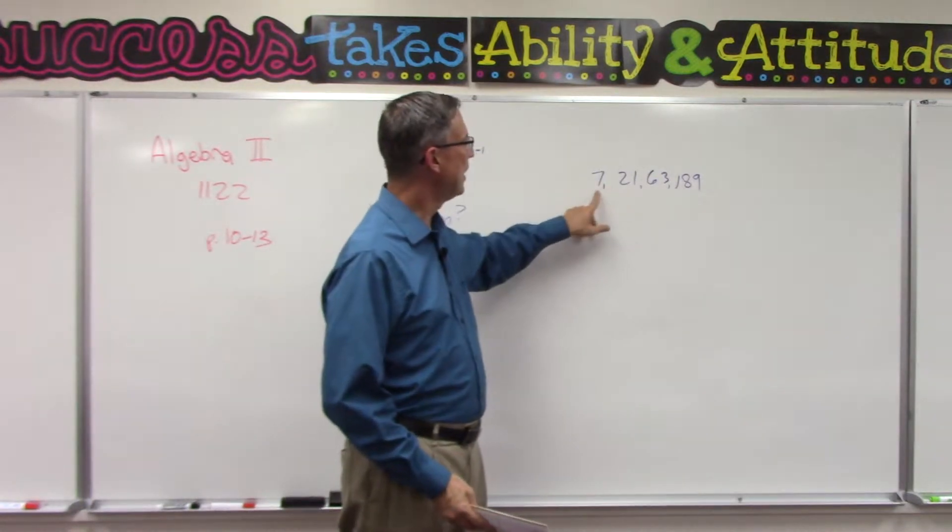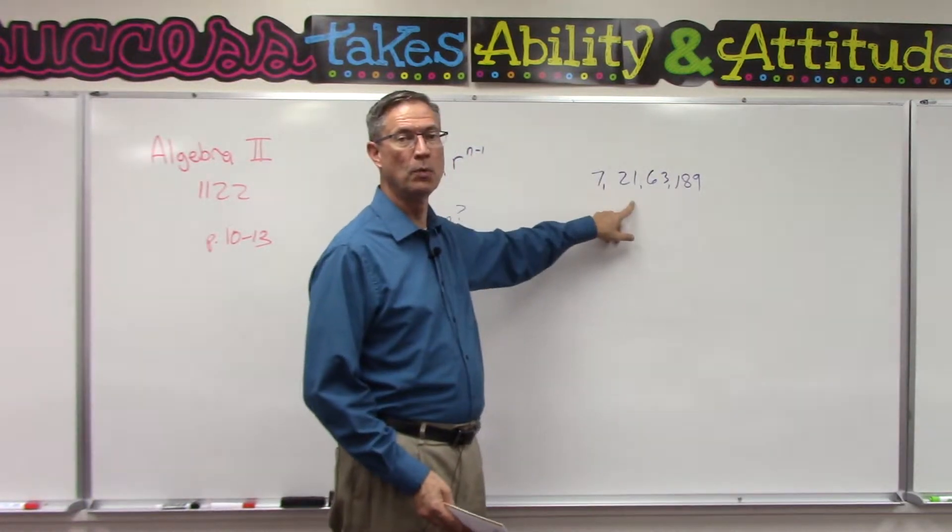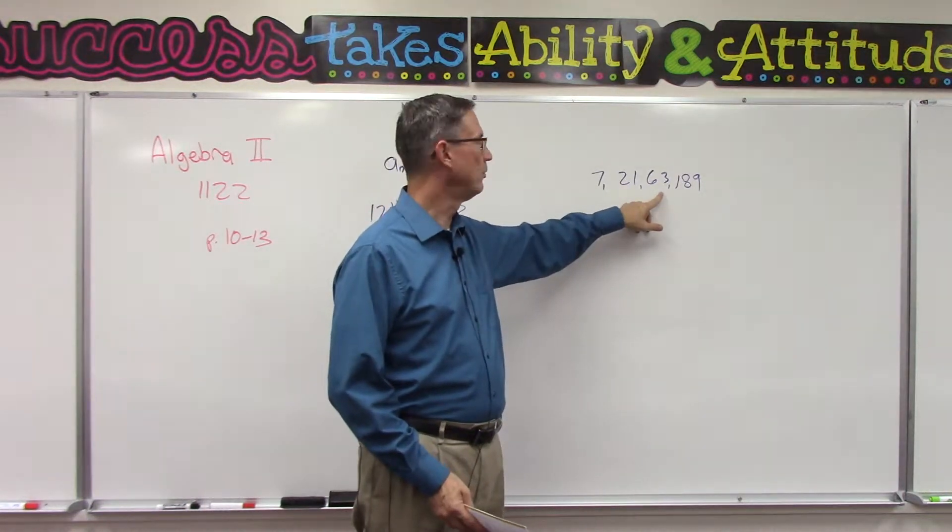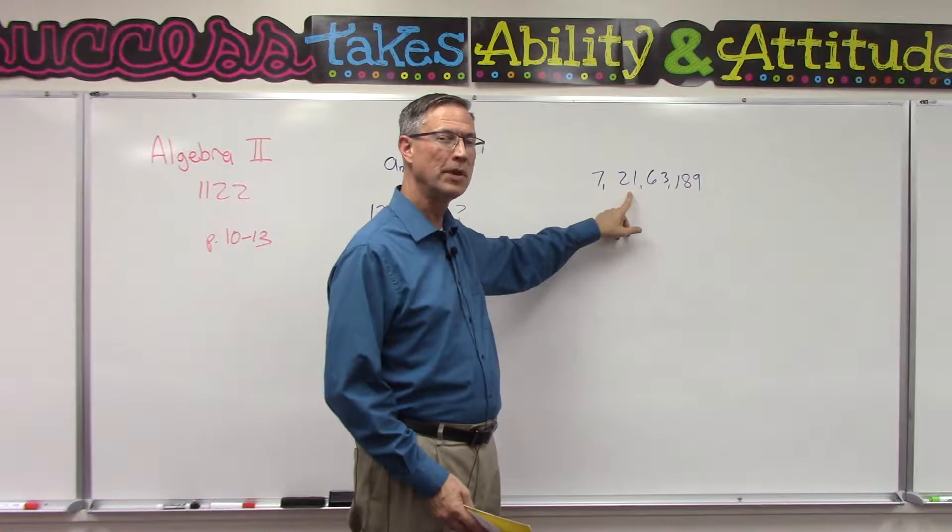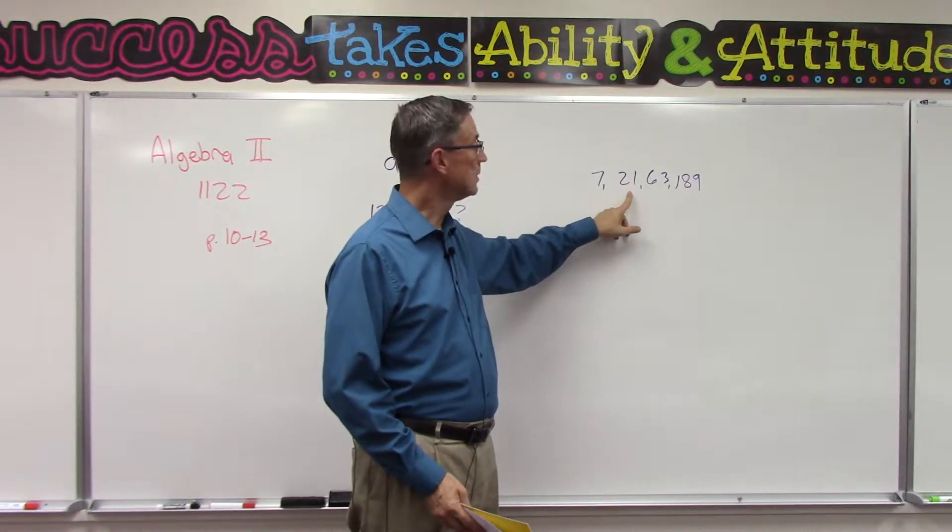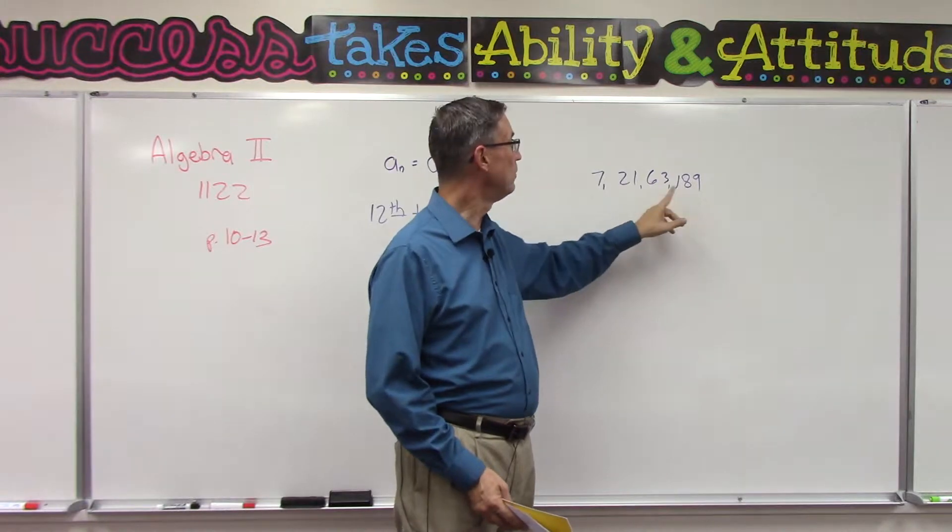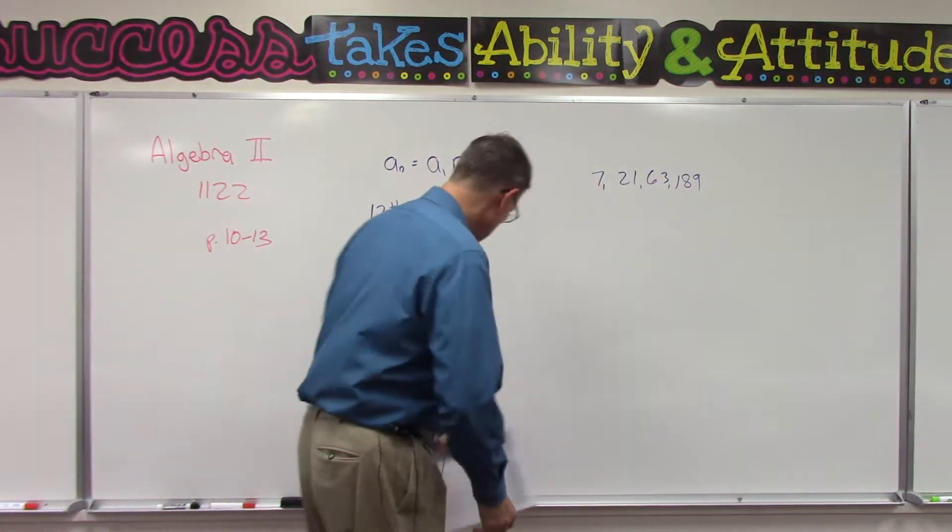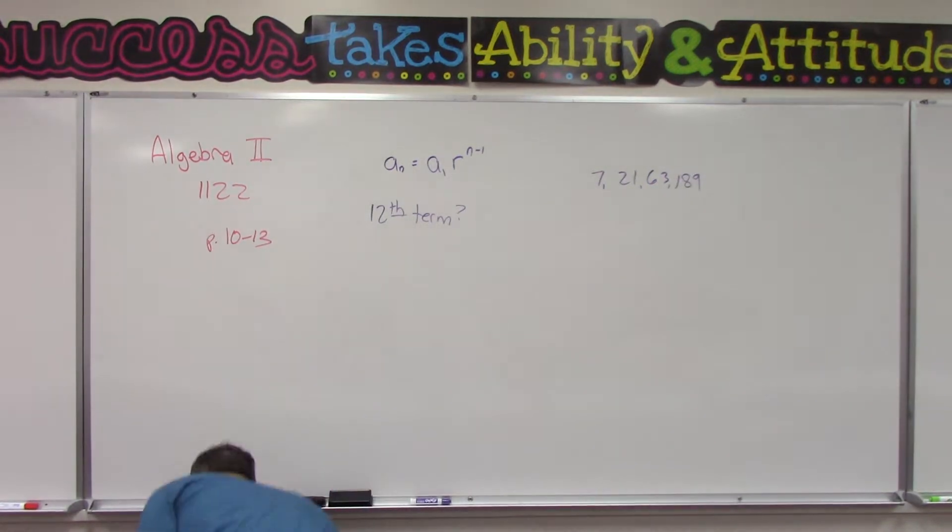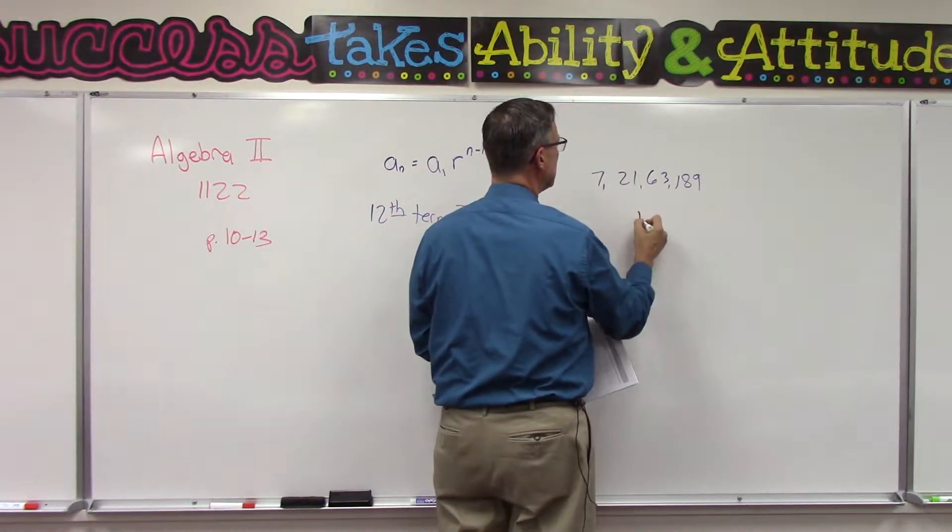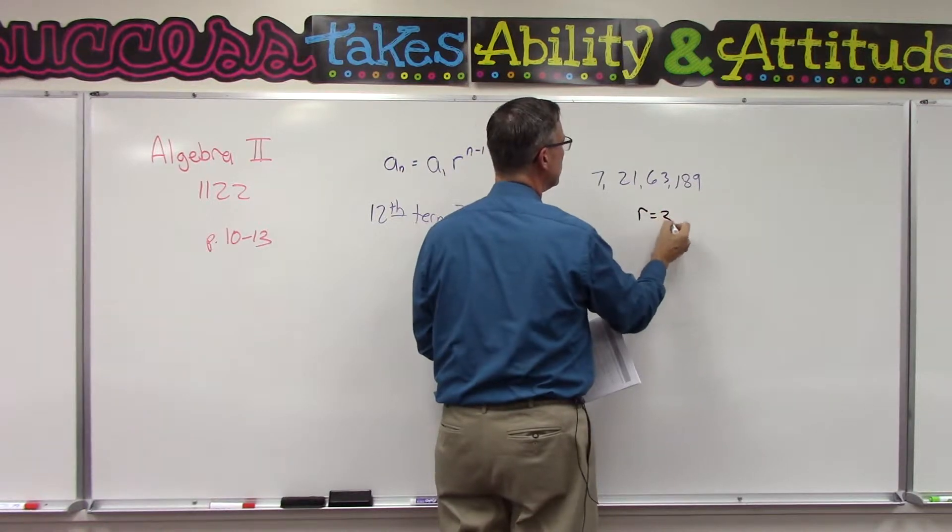So 21 divided by 7 is 3. Now let's see if that works here: 63 divided by 21, is that 3? Yes it is. And then 189 divided by 63 would give me 3. So in a case like this, I could say that r equals 3—that is the ratio.